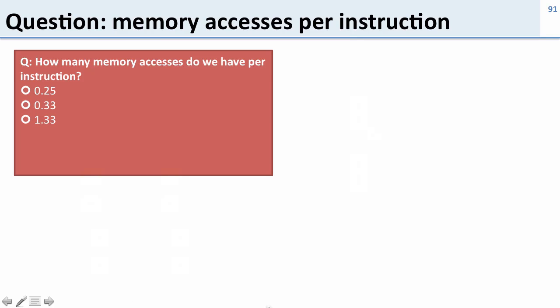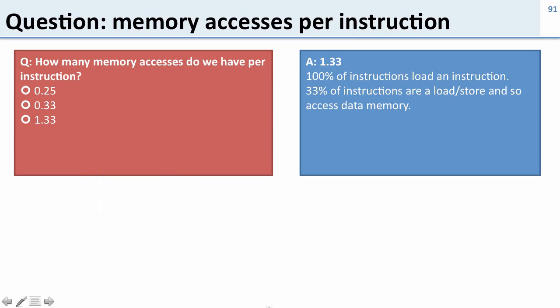So question, how many accesses do we have per instruction? Well, the answer here is about 1.33. And as I just said, it's because all instructions load an instruction, and about a third of instructions are loads or stores, so also access data memory.